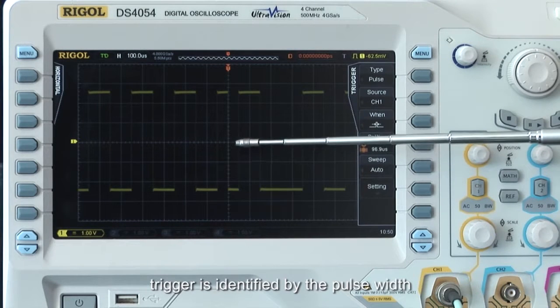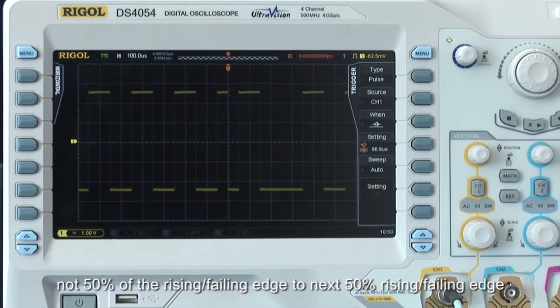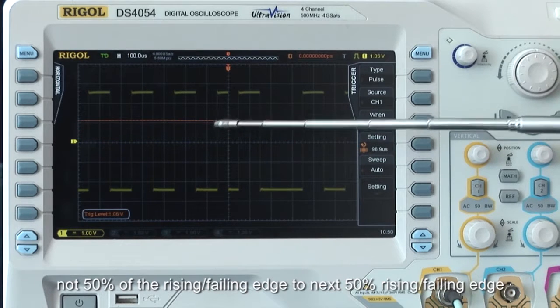The trigger is identified by the pulse width, from 50% of the rising or falling edge to the next 50% of the rising or falling edge.